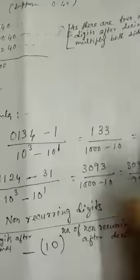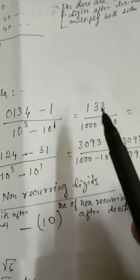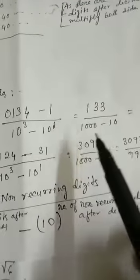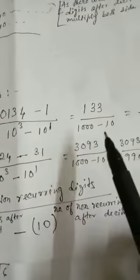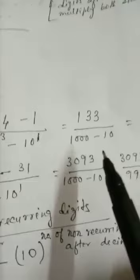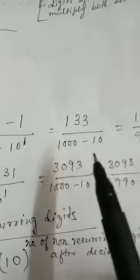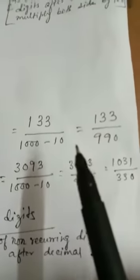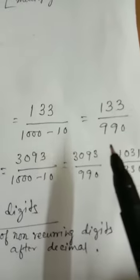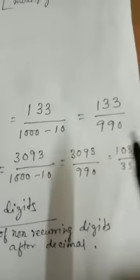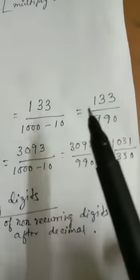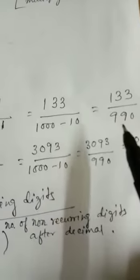And you solve it now. You get therefore 133, divided by 1000 minus 10. So you get 133 by 990. You cannot reduce it anymore, so that is your answer.